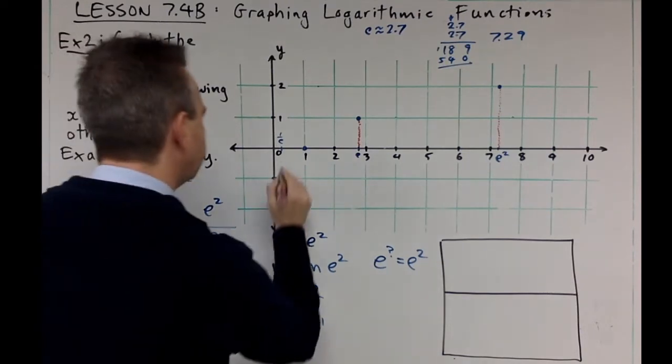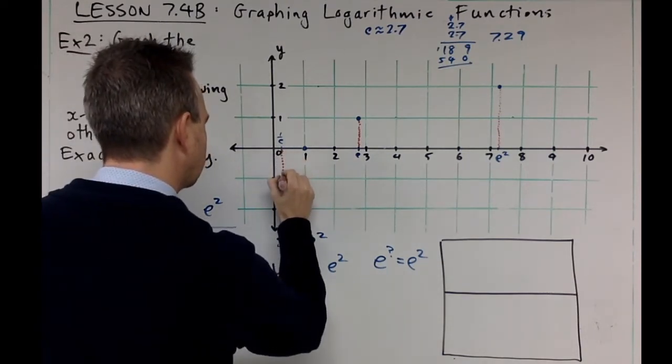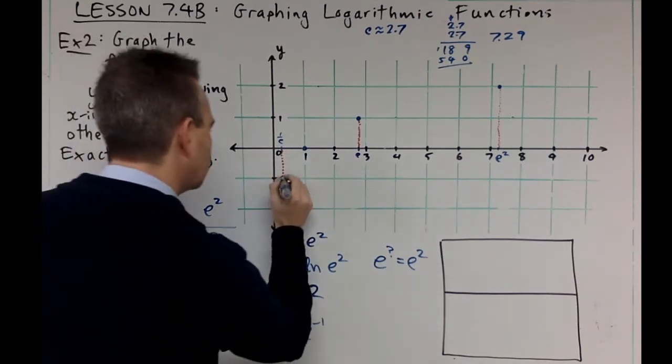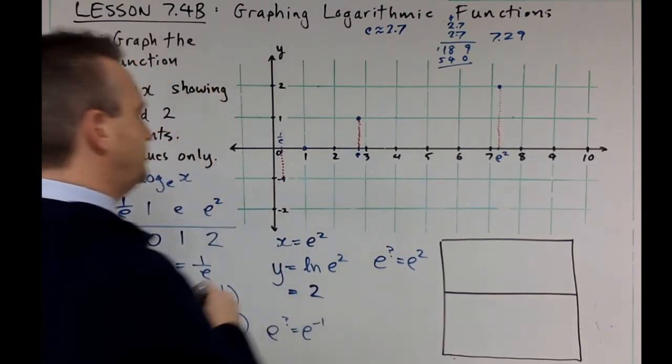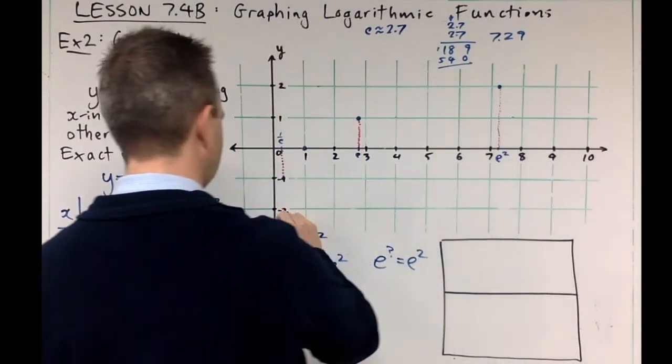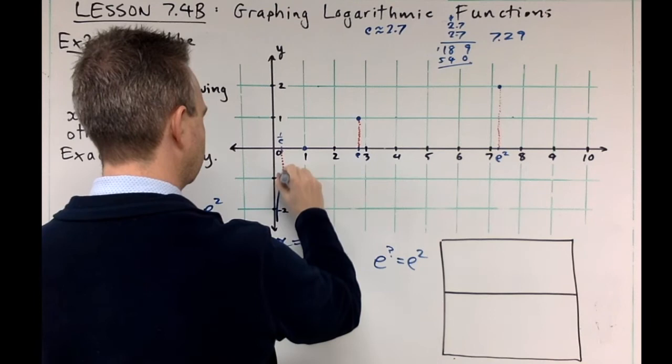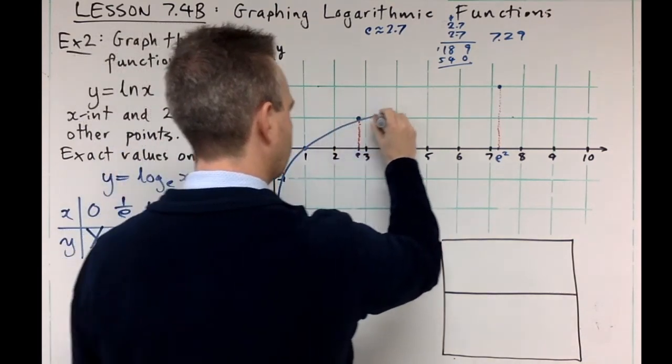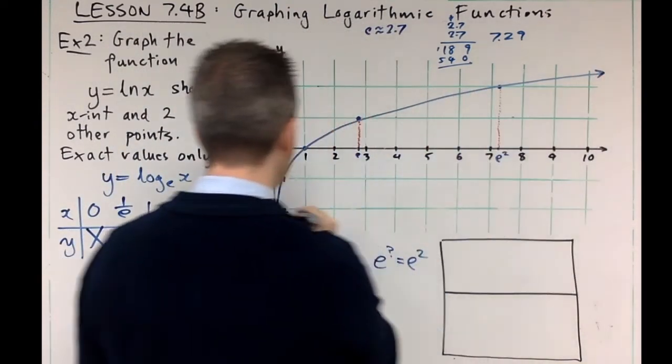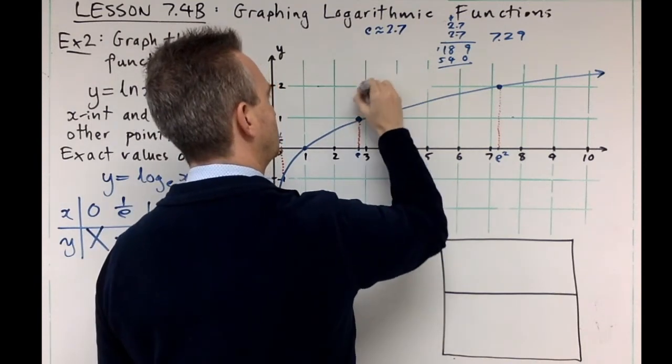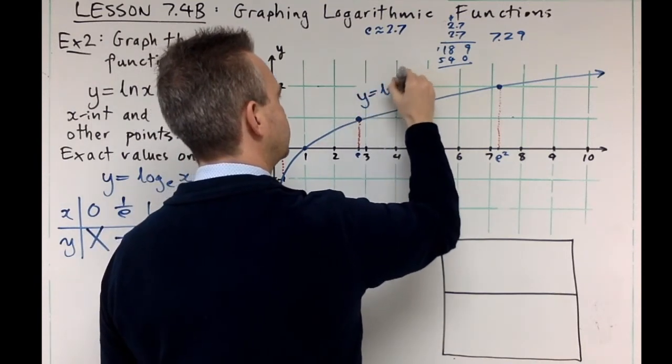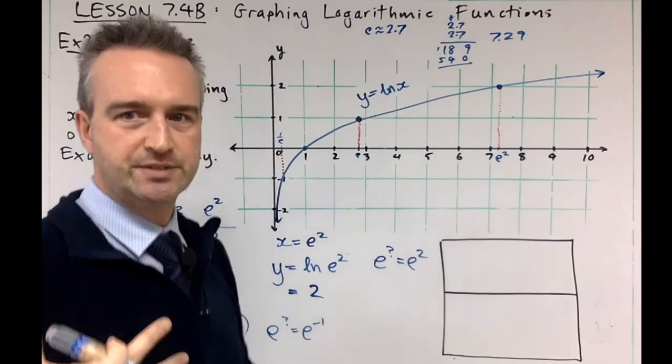And obviously you can see the shape forming there. Asymptote going out like so, put the equation next to that. So y equals ln x, same shape, it's just a different scale.